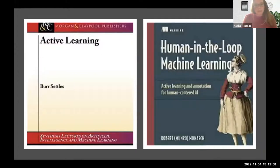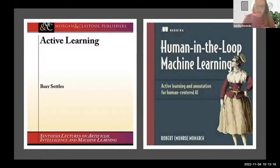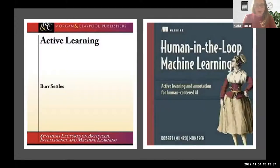Here I have two textbooks that this course is mainly based on — the most traditional ones in the field of active learning. The first, on the left, is a very traditional active learning textbook from 2012. The second is 'Human in the Loop Machine Learning,' a very recent one issued last year in 2021. I find that they complement each other, and I also base this course on some articles.